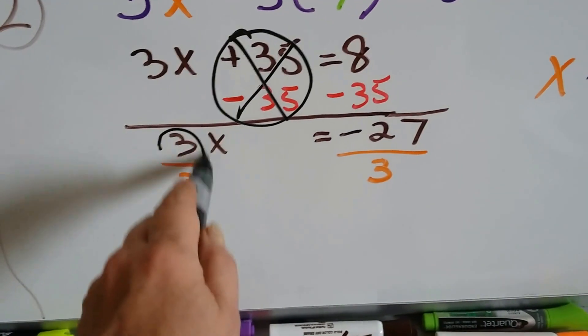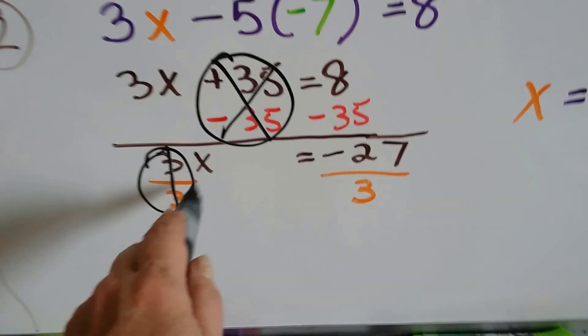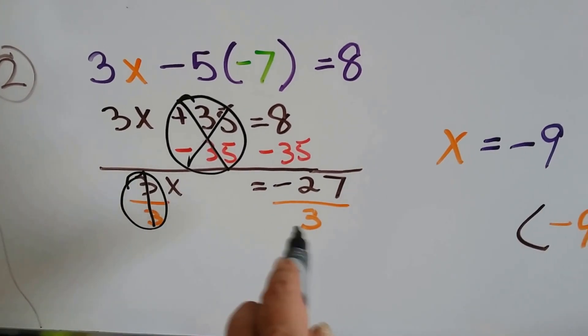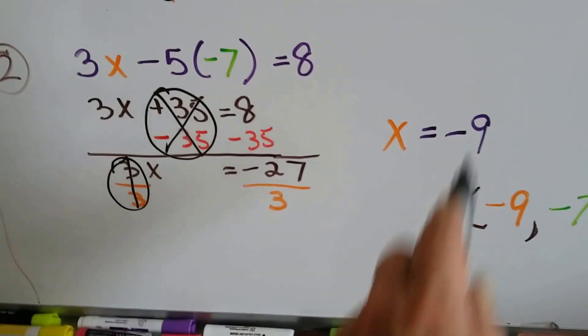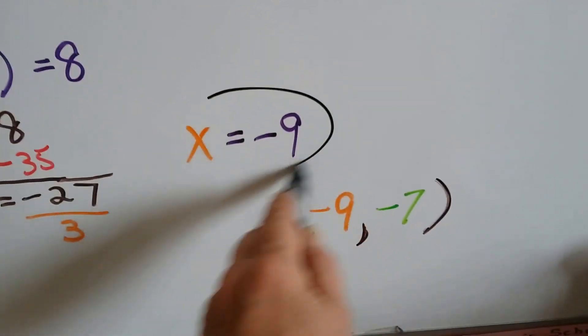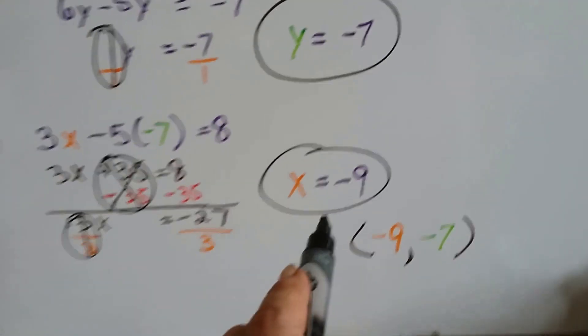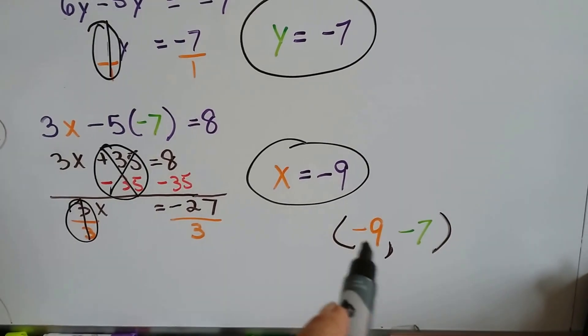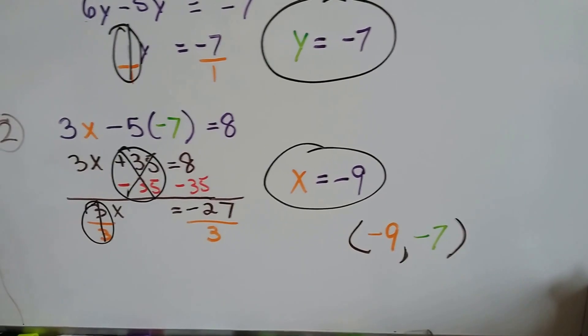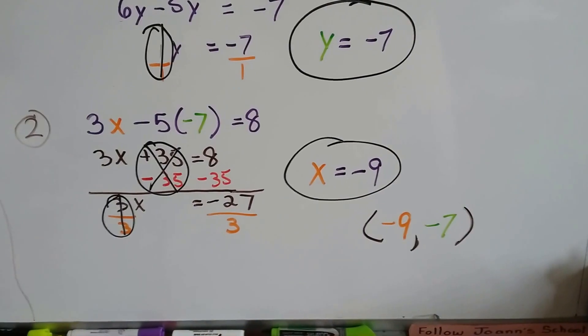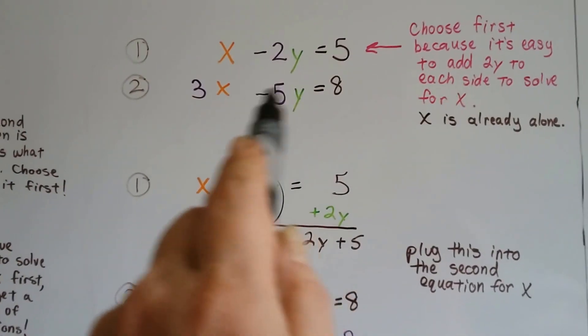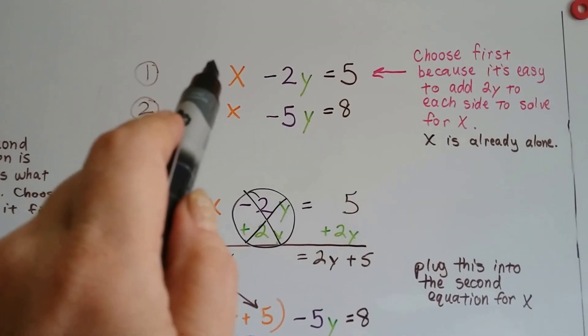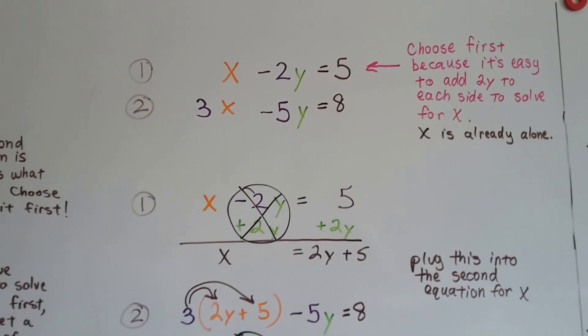Now we've got 3x equals -27. If we divide by 3 on each side and get our friend the invisible 1x, so we have x is equal to -27 divided by 3, that's a -9. Now we've solved for x. We have y and x. Our ordered pair is, because the x is first, -9 comma -7. And that's the solution for the system of equations for these two. And it all started because that x had no coefficient. It was by itself, and it was the easiest one to start with.